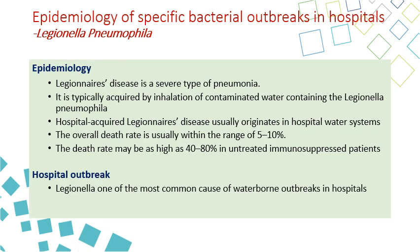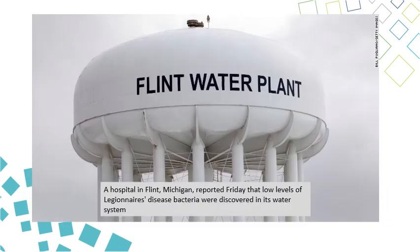Legionnaire's disease is a severe type of pneumonia, typically acquired by inhalation of contaminated water. Water contaminated with Legionella produces fine droplets or mist that spreads in the air, and somebody who inhales this gets Legionnaire's disease. Hospital-acquired Legionnaire's disease usually originates in the hospital water system. The mortality rate is 5 to 10% and can increase up to 80% in immunocompromised patients. It can sometimes cause waterborne outbreaks in the hospital when the water system is contaminated with Legionella.